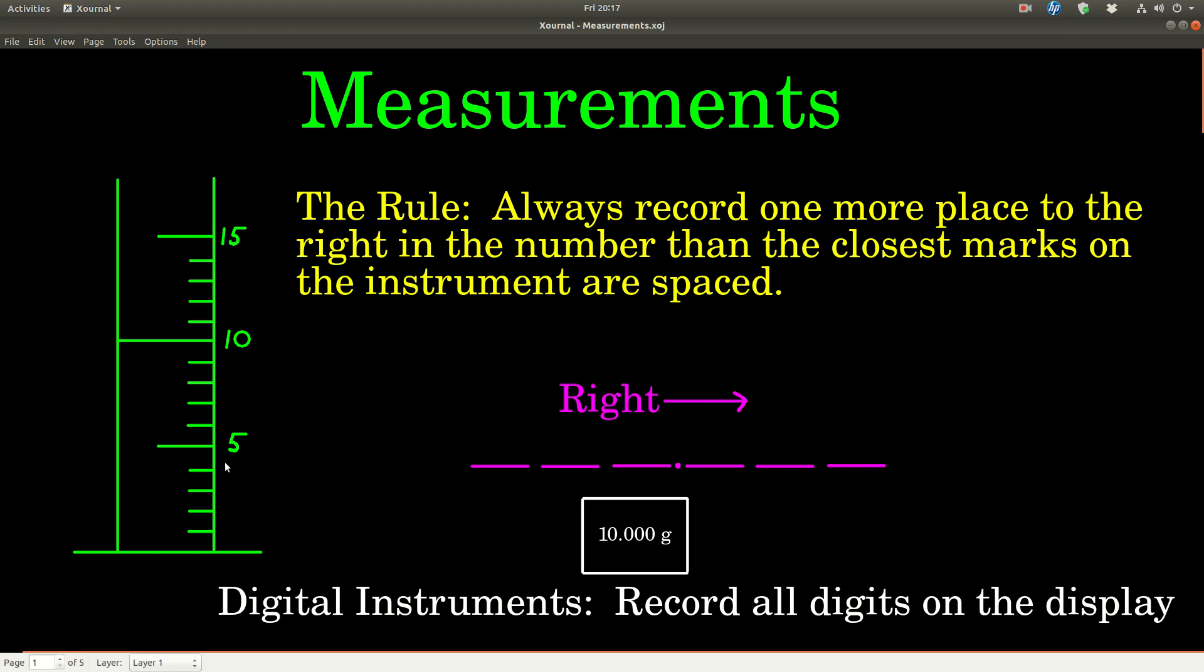What does that mean? Well, it means that for example with this graduated cylinder here, the closest marks, the smallest marks, are every one milliliter apart - one, two, three, four, five and so on. So that's in the ones place right here in this number line. There's the decimal point, this would be the ones place, tens, hundreds, tenths, hundredths, thousandths and so on.